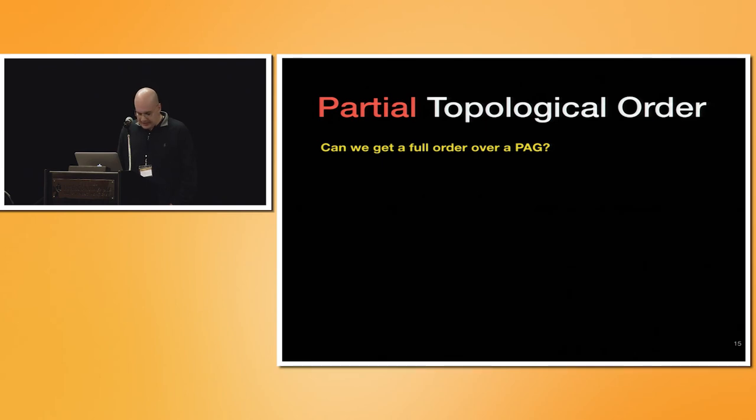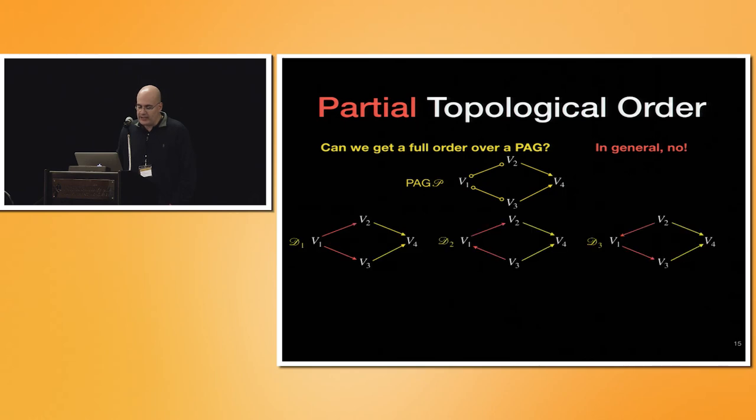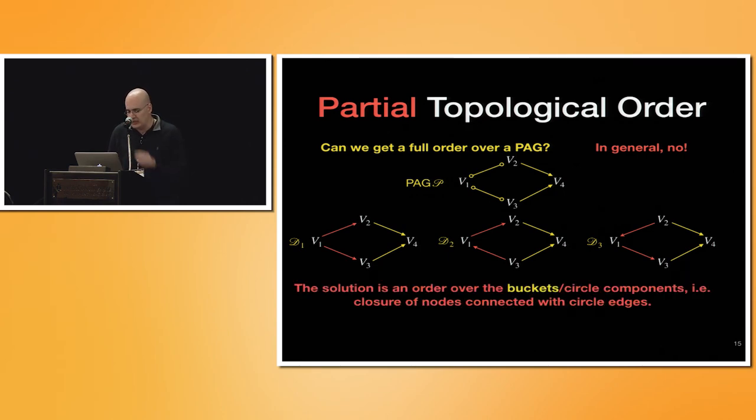The other thing that we will need is that when you have a DAG, we can have a topological order. And Tian's algorithm relies strongly on the order. It turns out that when you have a PAG, we don't necessarily have an order. For example, consider this PAG there. It turns out we get the graph 2 and 3. The graph 2 is saying that there is a chain V3, V1, and V2. And the other one, there is a reverse chain V3, that is V2, V1, and V3. Which means that we cannot reconcile these three nodes. Then what we will do, you put them in the same bucket.